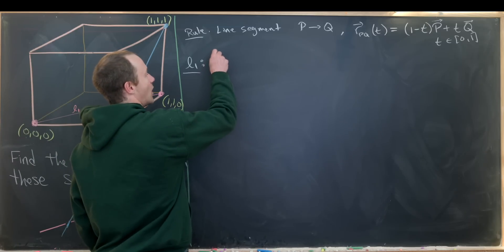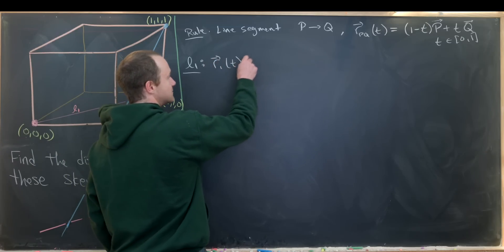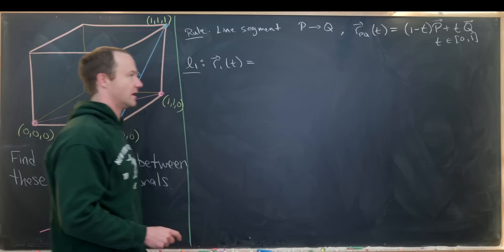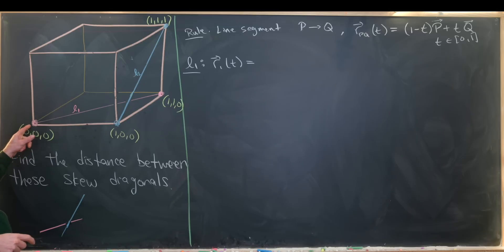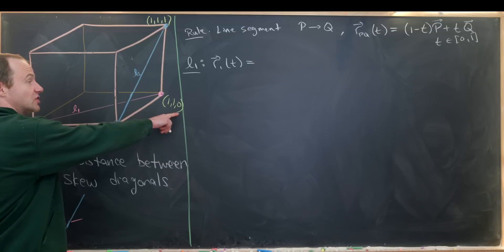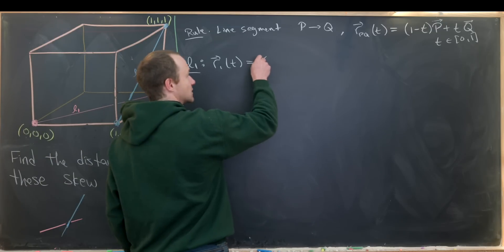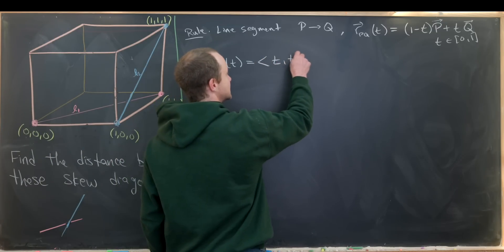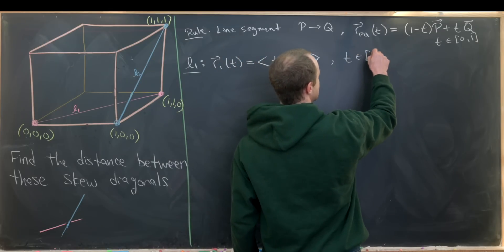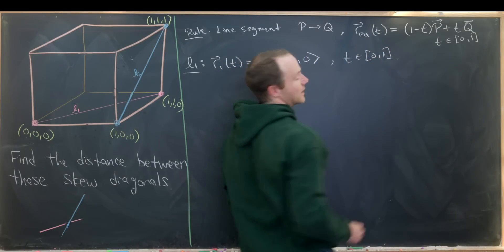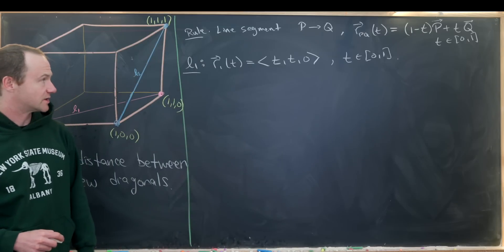So anyway, now we're going to do R1 of T. So using this formula up here, we have 1 minus T times the starting point. The starting point is the origin here, so that doesn't really contribute anything. And then we have T times the ending point turned into a vector. So that'll look like this. We have T, T, 0. And here we're going to take T from 0 to 1.